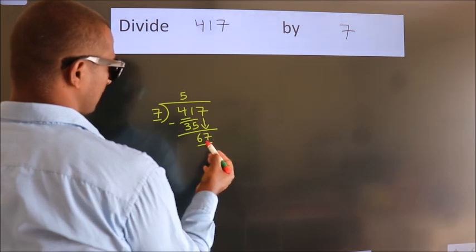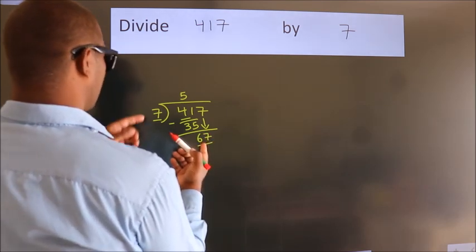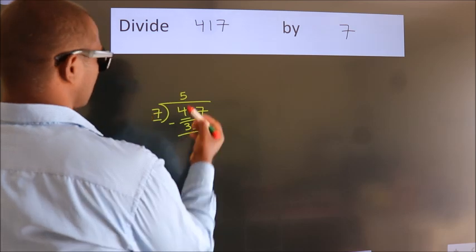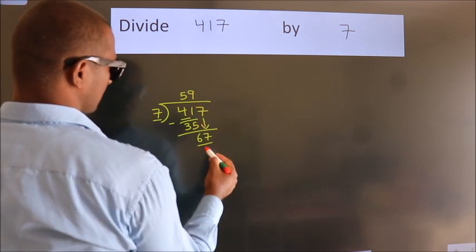So, 67. A number close to 67 in the 7 table is 7 nines, 63.